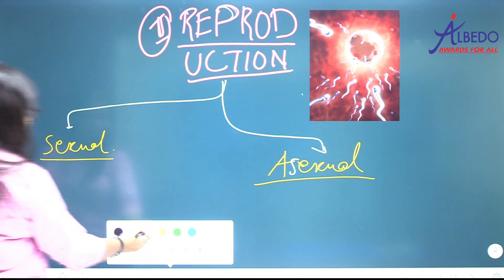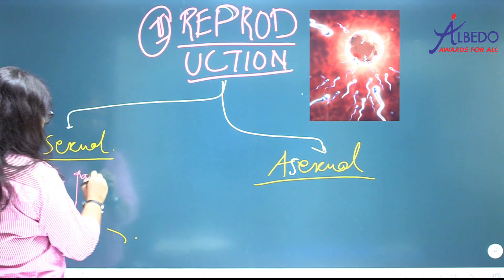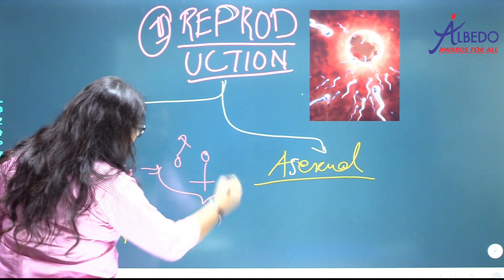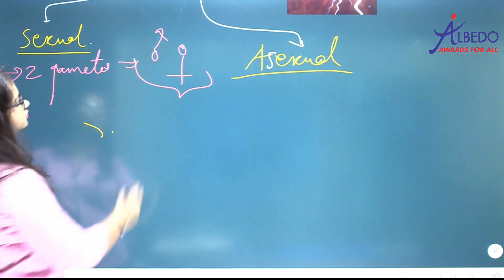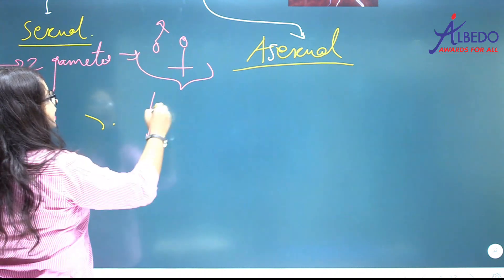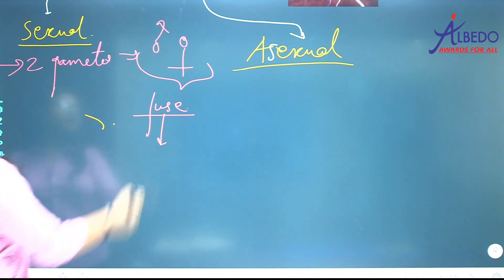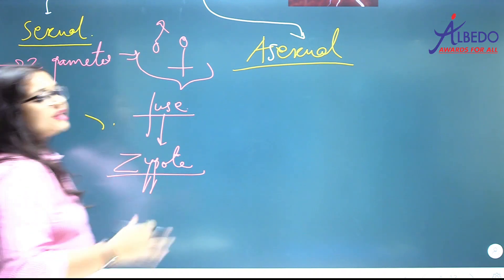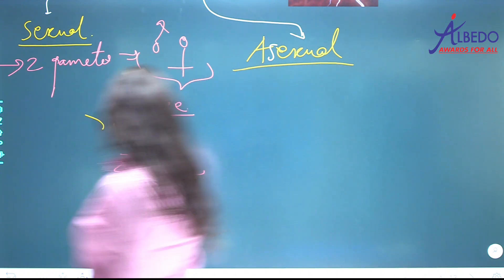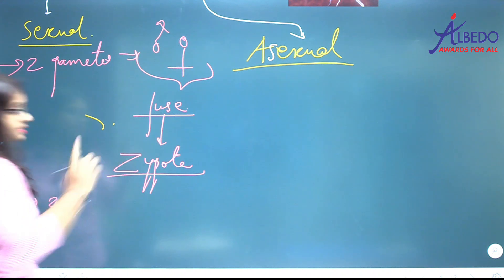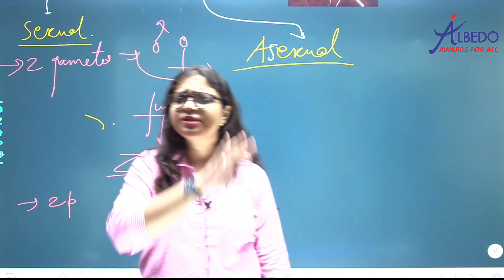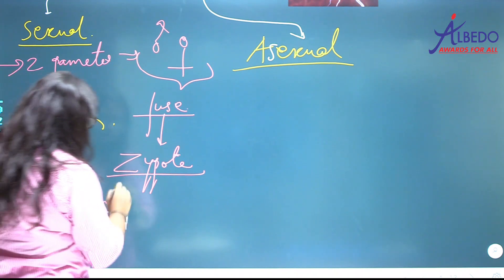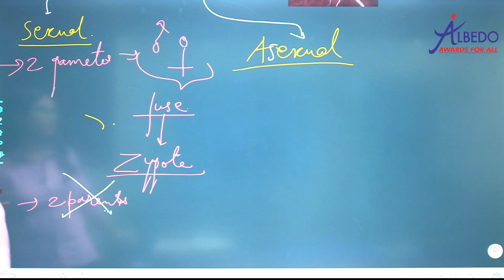So the definition of sexual reproduction: there must be two gametes — one male gamete and one female gamete. These two must fuse and form a zygote, and from that zygote a new organism arises. Two parents are not necessary for sexual reproduction. This is what is called sexual reproduction.